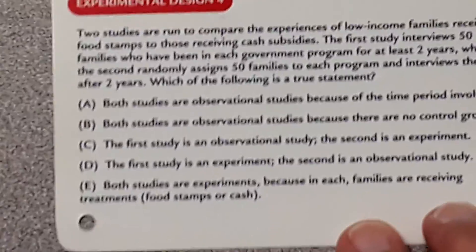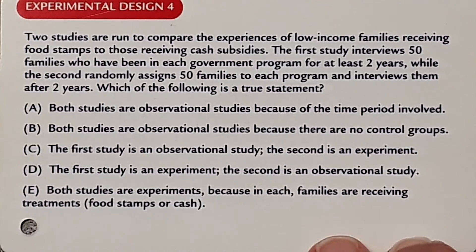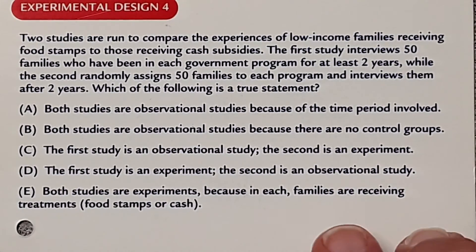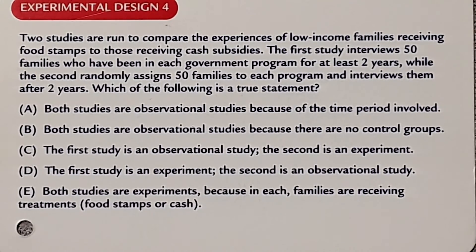Two studies compare experiences of low-income families receiving food stamps versus cash subsidies. The first study interviews 50 families who have been in each government program for at least two years, while the second randomly assigns 50 families to each program and interviews them after two years. The question asks which of the following is a true statement.